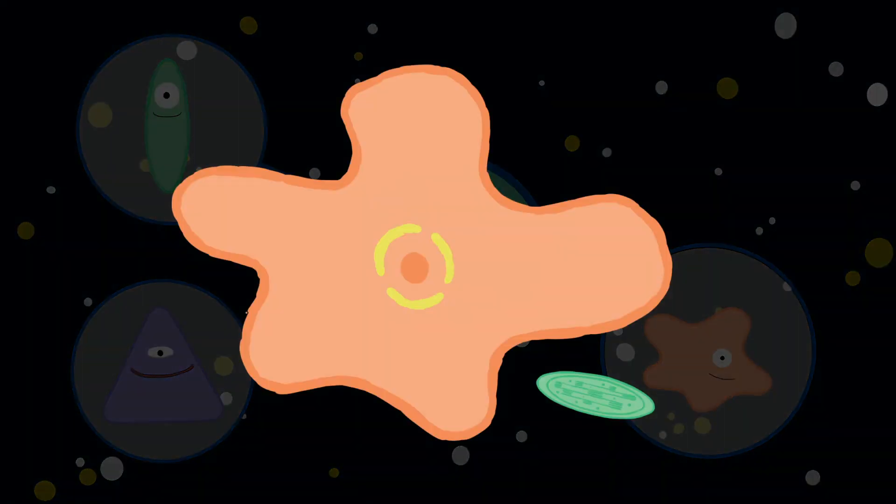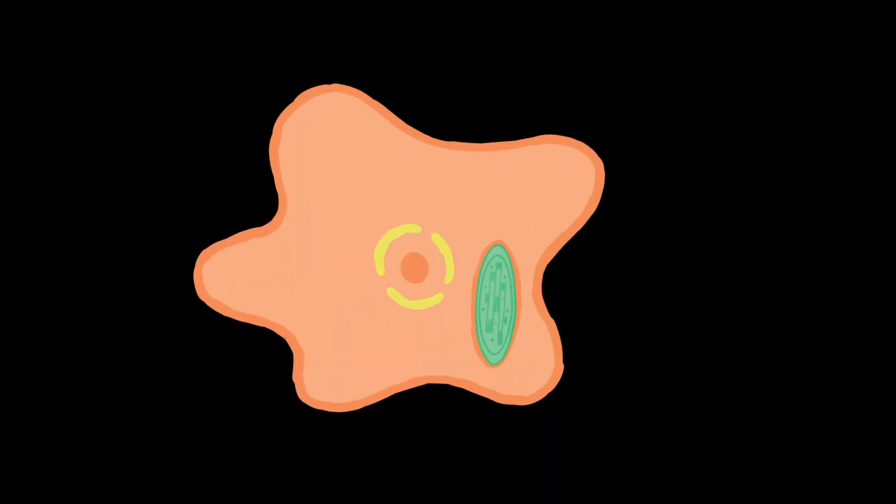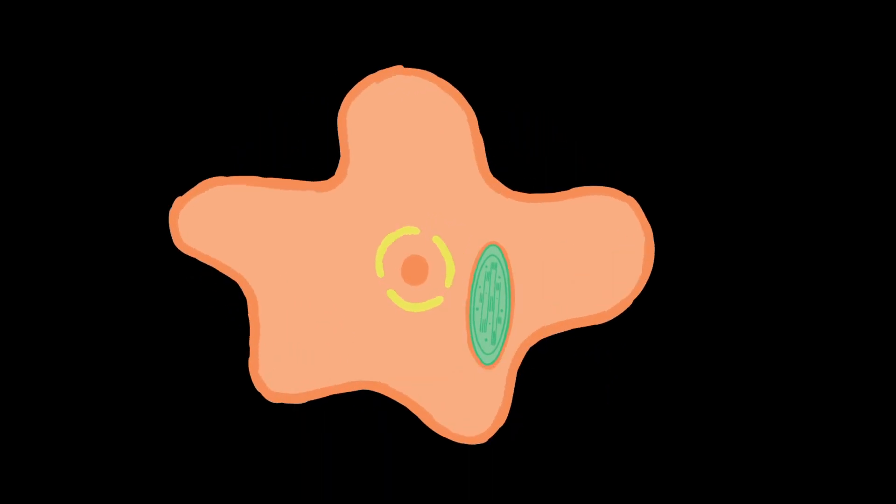The blob cells would occasionally absorb the little photosynthetic bacteria. These bacteria then lived inside the blob and divided like they always had, but their existence became linked.